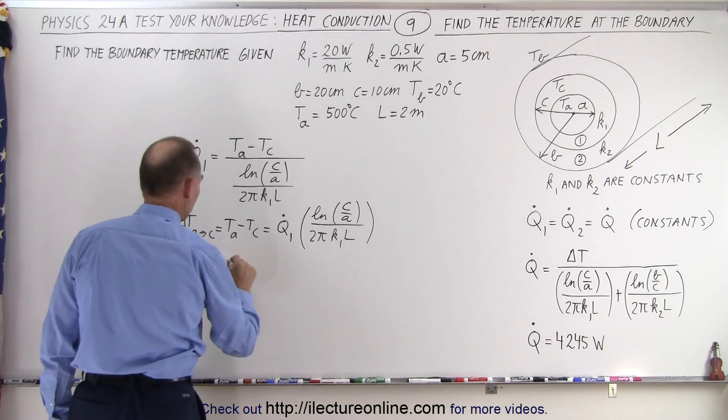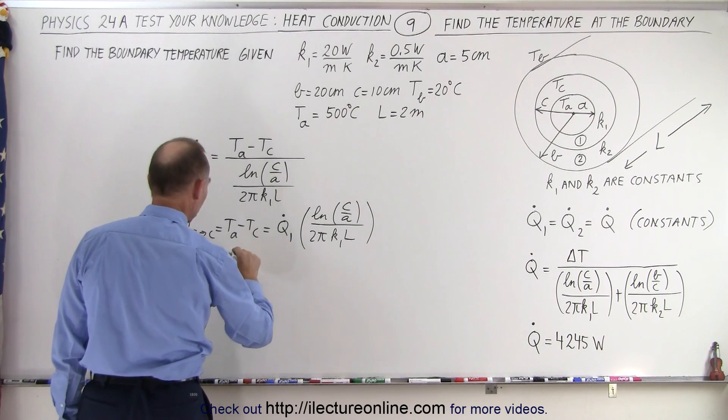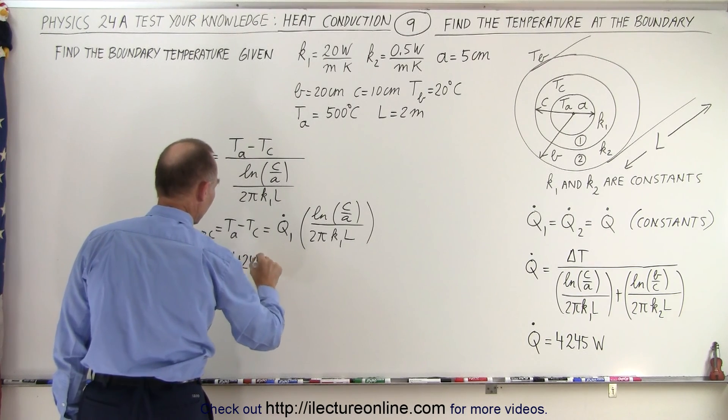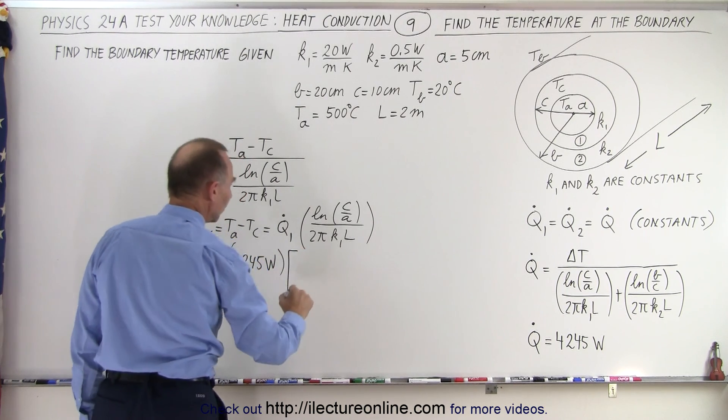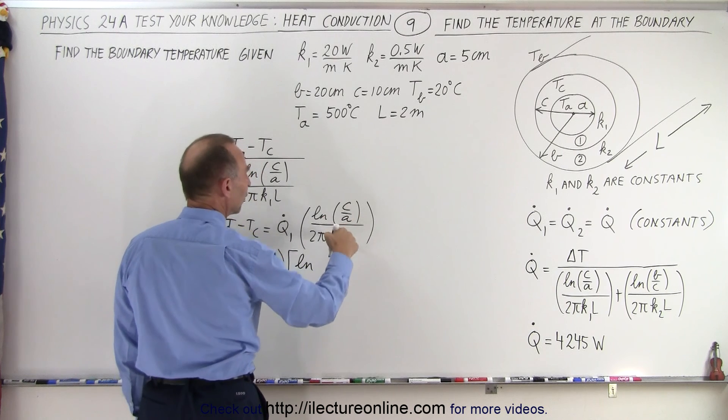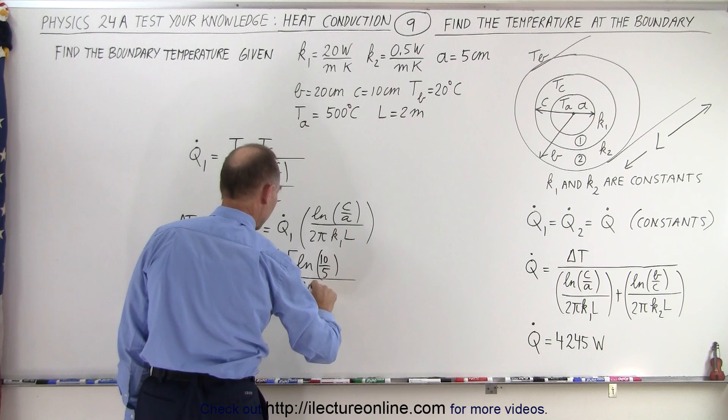So that's equal to Q.1 is going to be same as Q dot, which is 4245 watts, multiplied times the natural log of C over A, that would be 10 over 5, divided by 2π.